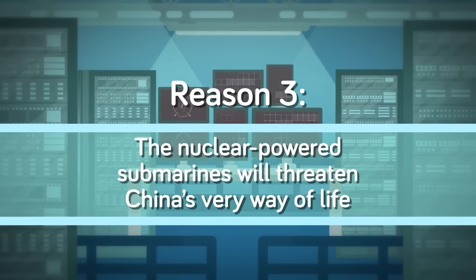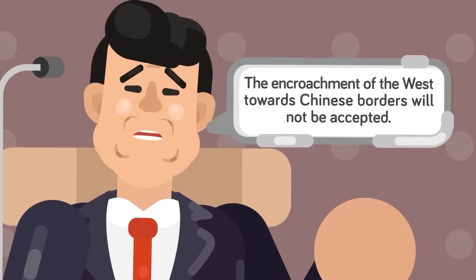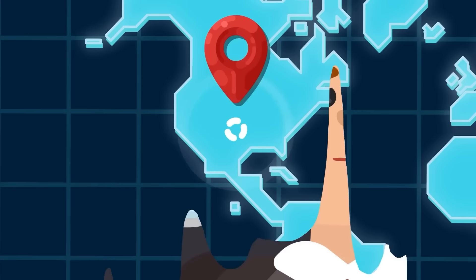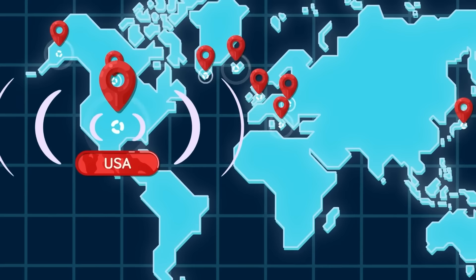Reason 3. The nuclear powered submarines will threaten China's very way of life. China constantly warns that the encroachment of the West toward Chinese borders will not be accepted. To be fair, Western powers, particularly the United States, have formed partnerships in the Pacific and Asia to keep China in check and increase its influence in the region. The morality and ethics of indoctrinating other parts of the world into Western ideologies can be debated, and there are definitely negative consequences to the US establishing military bases around the world. But for China, this is a matter of life and death.